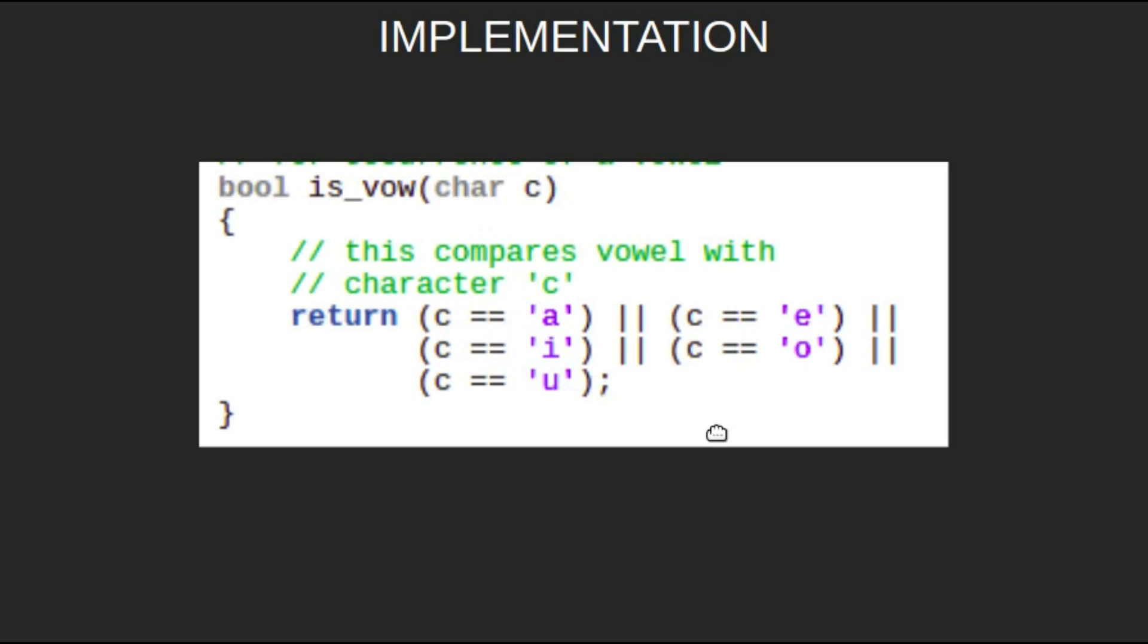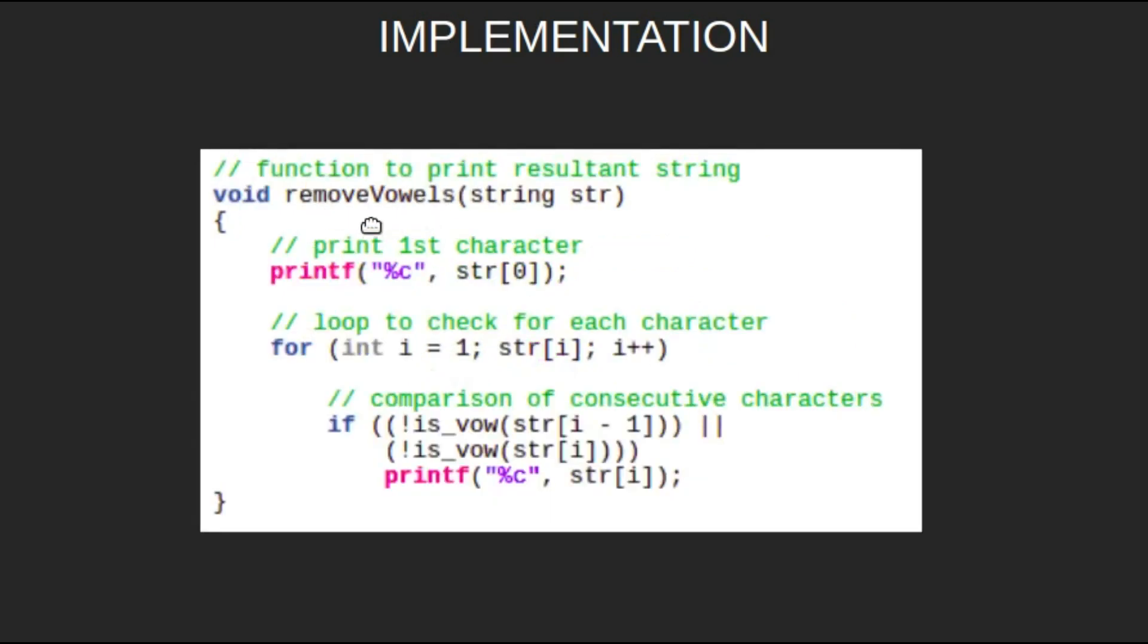This is our second method, removeVowels. It will remove consecutive vowels from the string. First we print the zeroth character, whether it's a vowel or consonant, as it does not have a preceding character.